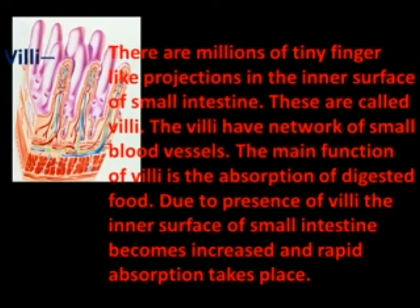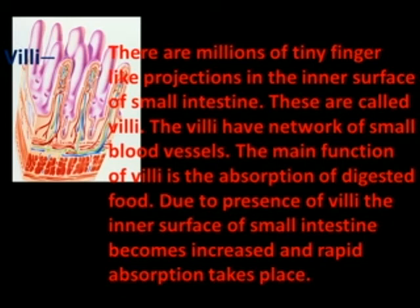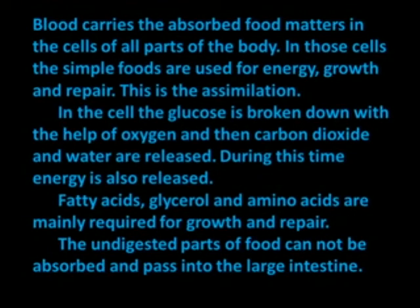There are millions of finger-like projections on the inner surface of the small intestine called villi. The villi have a network of small blood vessels. The main function of the villi is the absorption of digested food. Due to the presence of villi, the inner surface area of the small intestine is increased and rapid absorption takes place. Blood carries the absorbed food materials to the cells of all parts of the body.